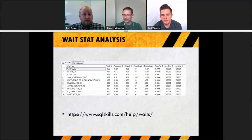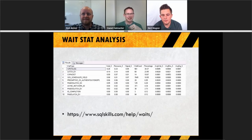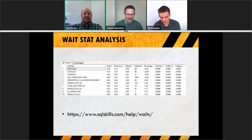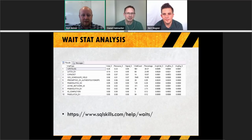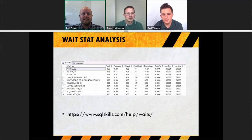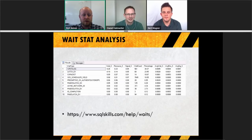Brent adds: even on a 40-core box you can have more than 40 seconds of wait if multiple processes are waiting for the same resource. The point is you can stack them — having more than a second of wait times in a one-second period just means you've got more than one process waiting, and it's counted per core.